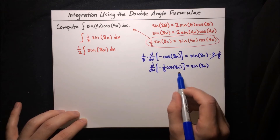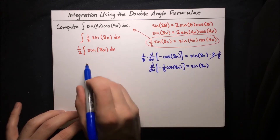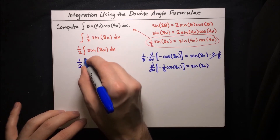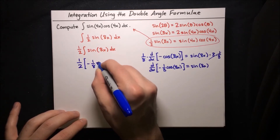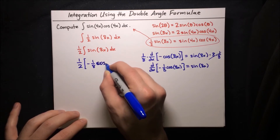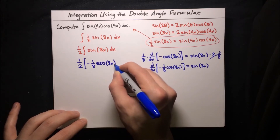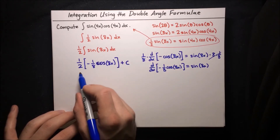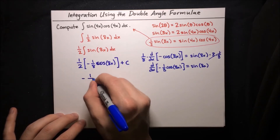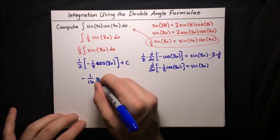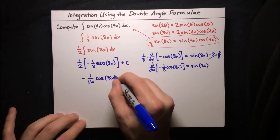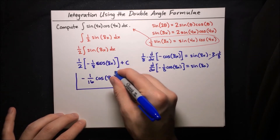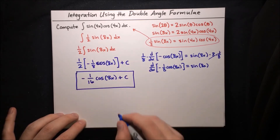So we can put that into the integral. This is one half times negative one eighth cosine of 8x. Don't forget your plus constant at the end. Multiplying through by one half, we get negative one sixteenth cosine of 8x plus our constant. And there we go — that's the result of the integral: negative one sixteenth cosine of 8x plus a constant.